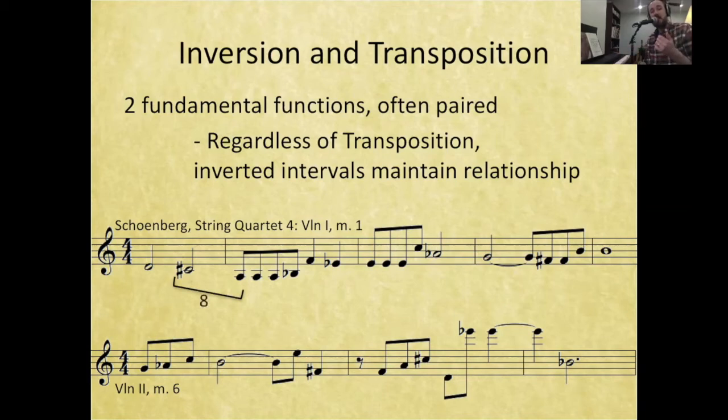Now let's look at the second to third note in the violin two part. We've got A flat, which we call 8, going up to 0. What would we call that? 8 to 0 is 4. And what do you know? 8 and 4 are an inverted pair.